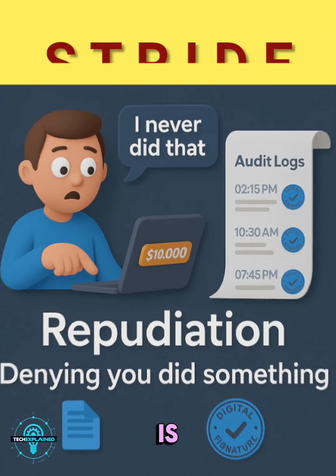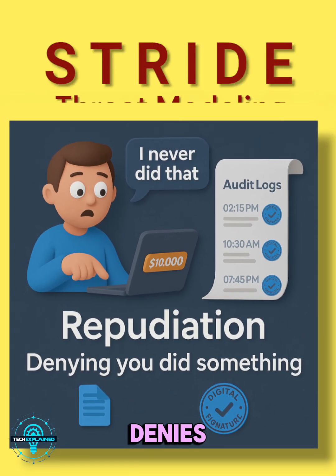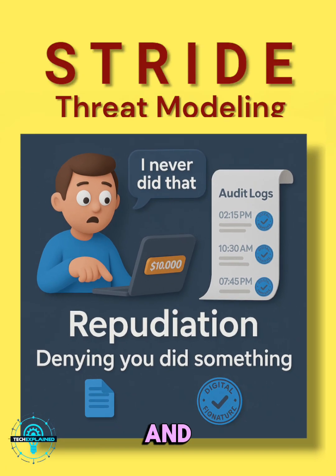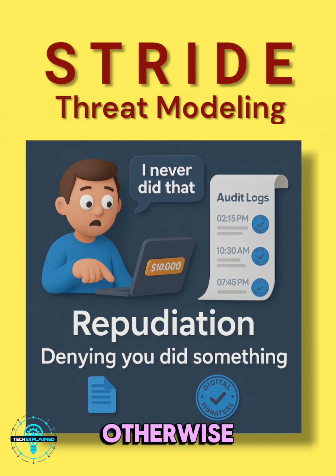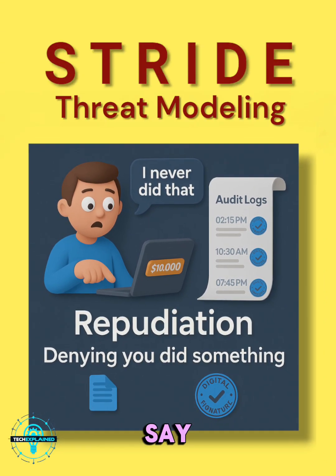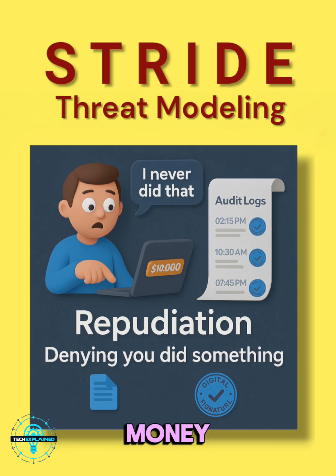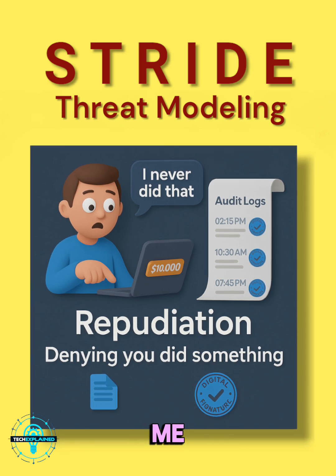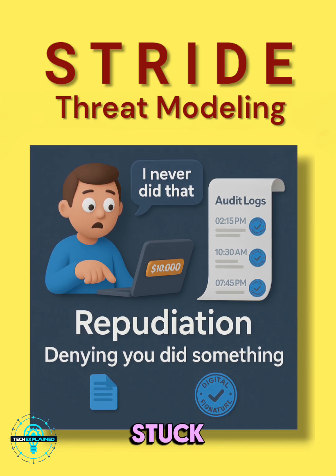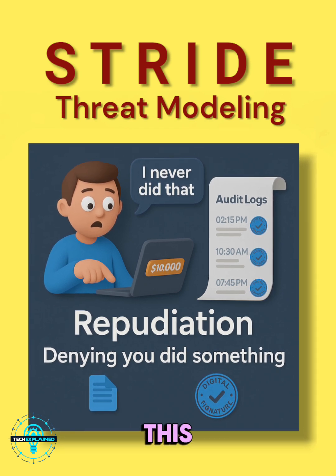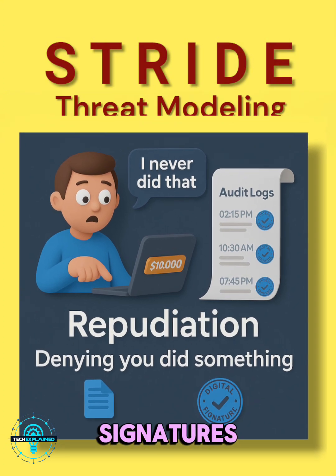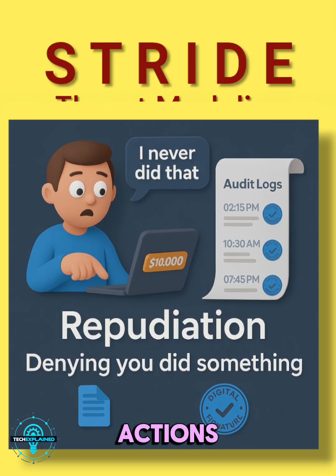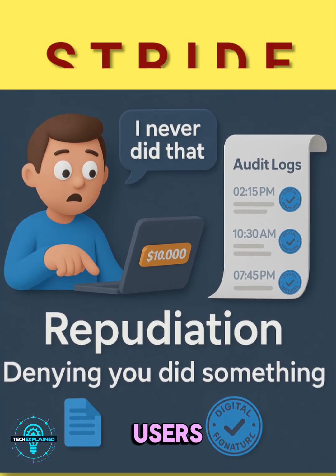Repudiation is when someone denies doing something and you can't prove otherwise. Say a user transfers money, then says, 'that wasn't me.' Without logs, you're stuck. To fix this, use timestamp logs and digital signatures that tie actions to users.